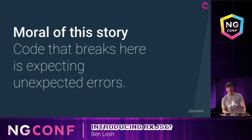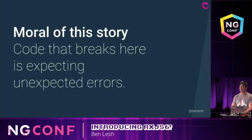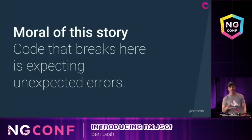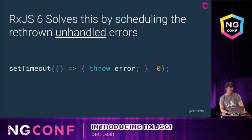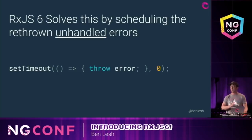The moral of this story is that the code that's going to break when you upgrade to 6 around this was code that was expecting unexpected errors, which is pretty amazing. RxJS 6 solves this problem by scheduling the unhandled errors to be re-thrown in a setTimeout, just like this.